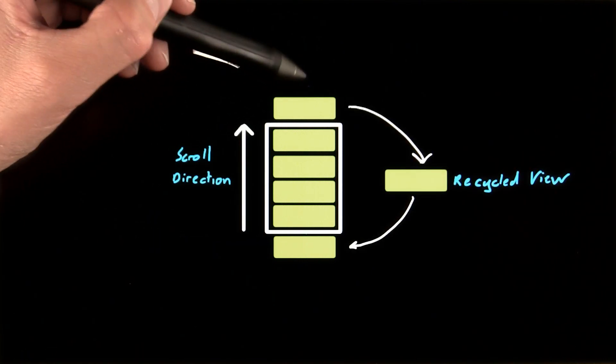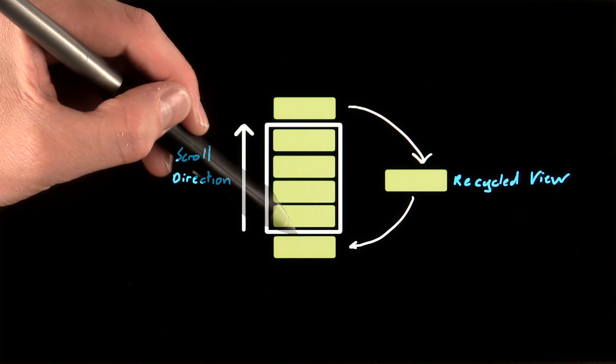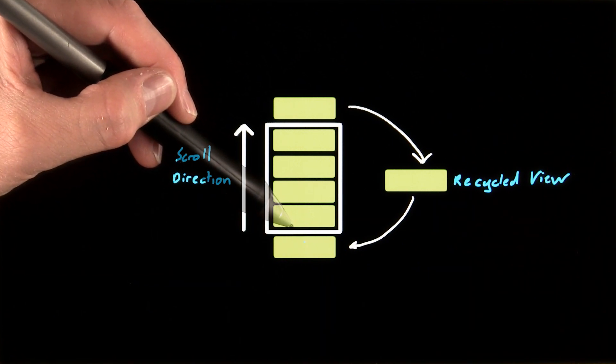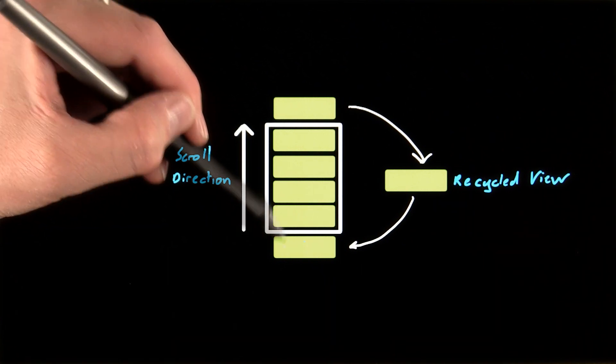The solution is recycling each view as it scrolls off the screen, allowing it to be reused when we need to show another item as it moves into view at the top or bottom.